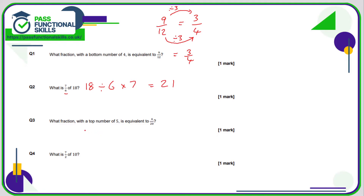Question three is a bit tricky: what fraction with a top number of five is equivalent to four out of 20? We'd normally think — what do you do to turn a four into a five? But you can't say 'add one' or that it's five over 21. We have to see it in terms of multiplication and division. Since I don't know what to multiply four by to get five, we'll go backwards and simplify. Four out of 20, dividing top and bottom by two, gives two over ten.